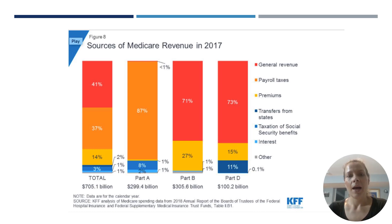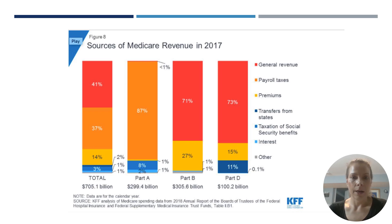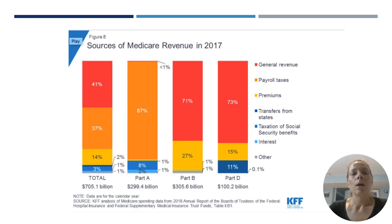Let's talk about how Medicare gets funded, or sources of Medicare revenue in 2017. For Medicare Part A — the second bar in on our chart — 87% of the funding is coming from payroll taxes. When the economy is good and more people are working, more people are paying payroll taxes, because everybody who works and gets a W-2 has to pay the payroll tax.